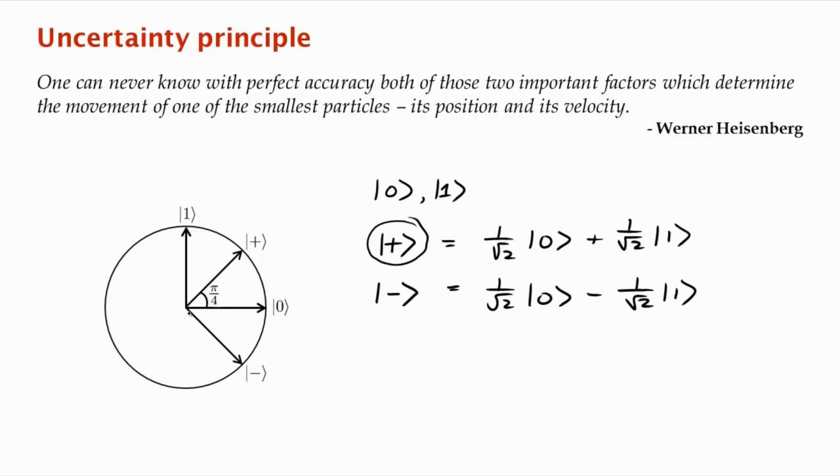So these are orthogonal vectors as well. If you were to measure either of these states, plus or minus, you would see 0 and 1 with probability half each. So ground or excited with probability half. But what distinguishes these two vectors, the reason they are orthogonal is because of the sign or the phase in front of this excited state. And so this is why we refer to this as the plus vector and this as the minus vector. These are just names that we have given to these two vectors.